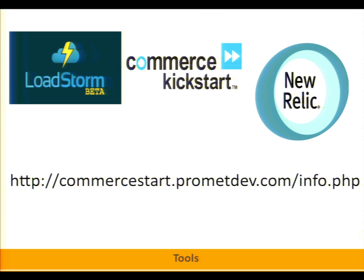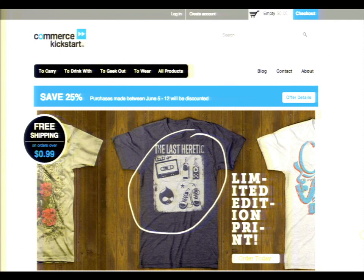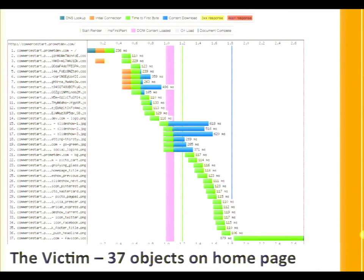This is just an Amazon instance. Here's our victim — Commerce Kickstart out of the box. The homepage is pretty quick with 37 objects; it doesn't have anything terribly heavy on it and doesn't call things from the outside. During load testing, you want to make sure anything you reference that you have no control over goes to the bottom of your HTML.